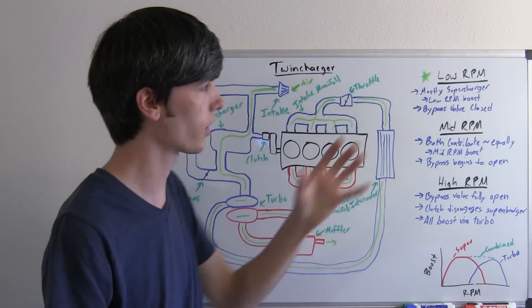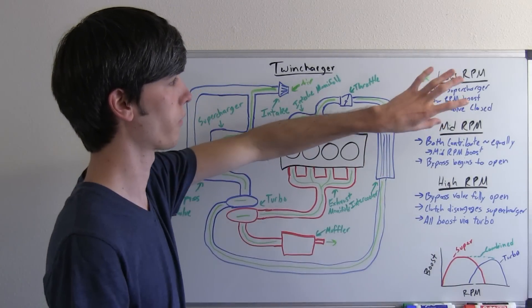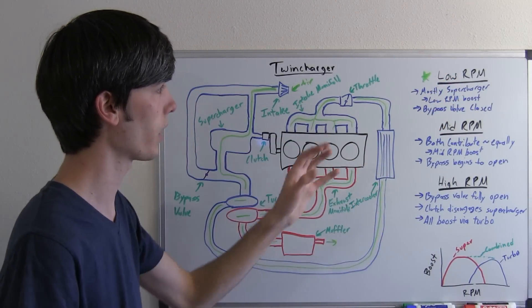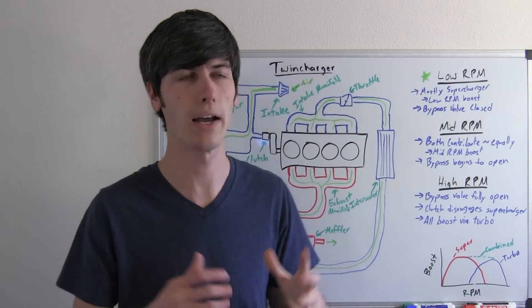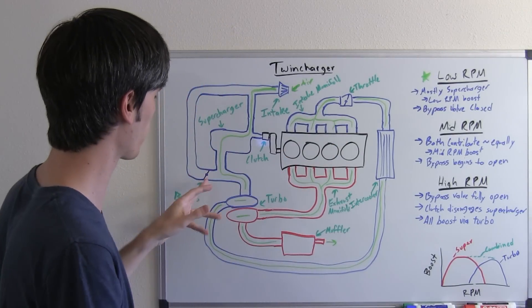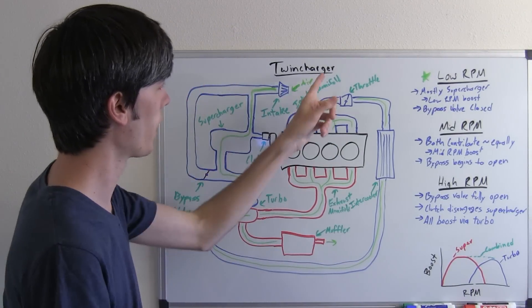So let's just kind of go through the rev range. First we're going to start with low RPM. When you're at low RPMs, most of the boost is going to be created by the supercharger. So what you're going to do is you're going to have this bypass valve closed, that air is going to come in, it's going to go through the supercharger.